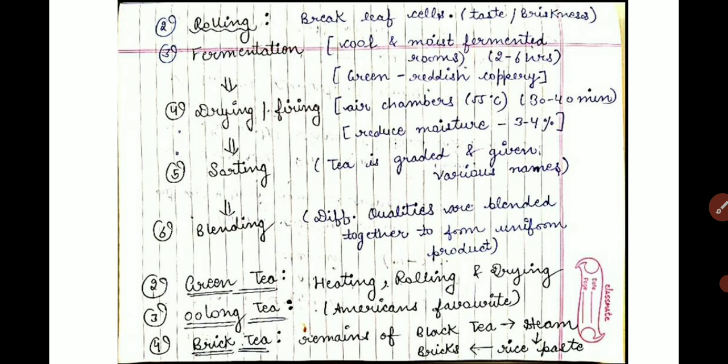Because heating is completed quickly, the color of the leaves does not change in green tea. Oolong tea is America's favorite tea and the procedure is the same as black tea, except that fermentation is not done for the full 2 to 6 hours — there is much less fermentation.